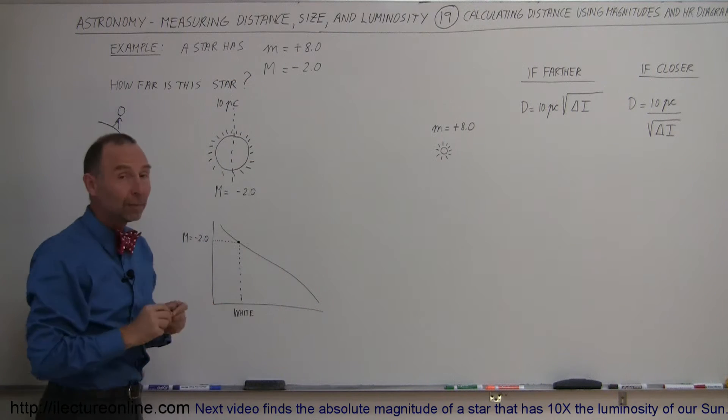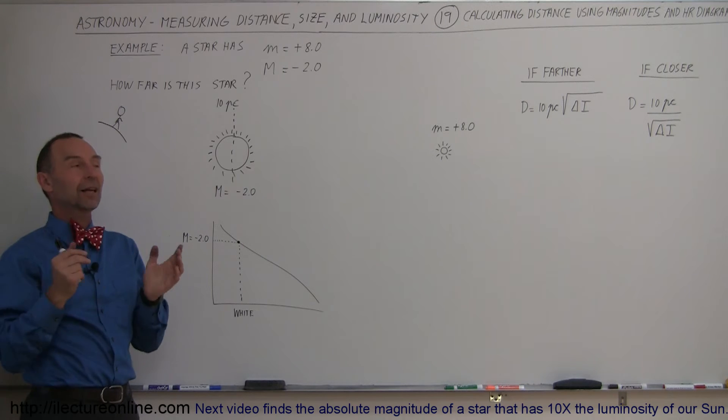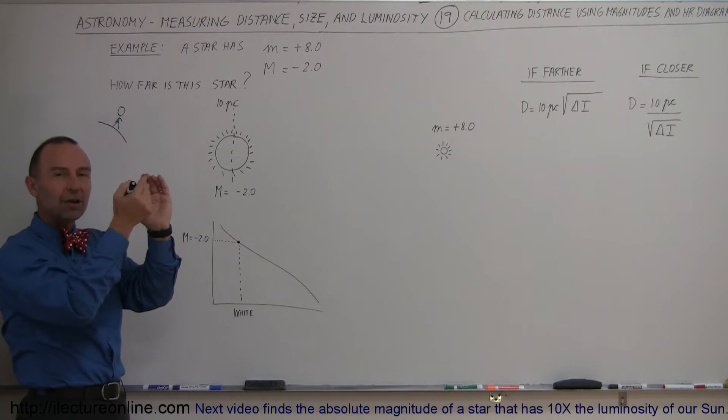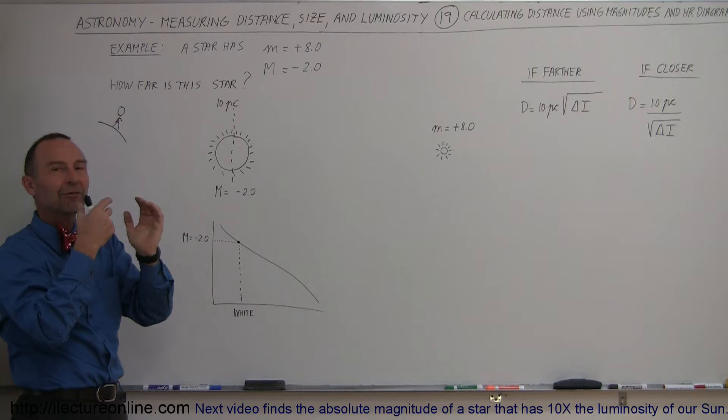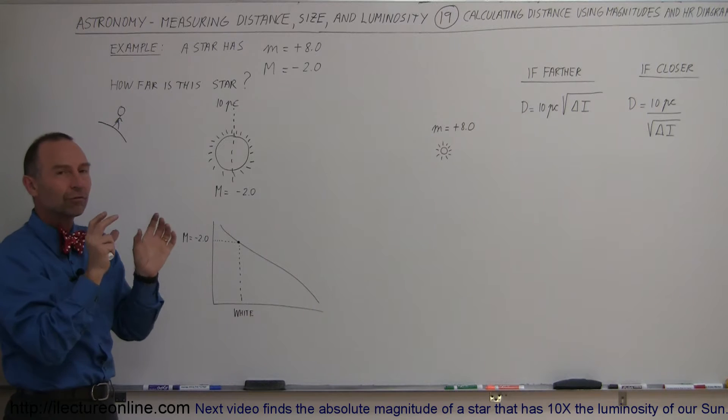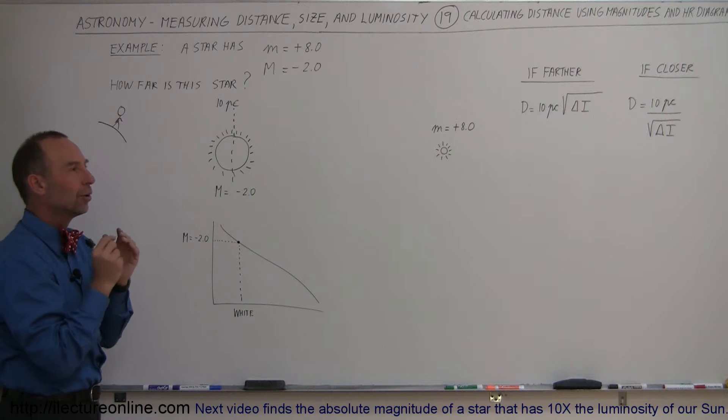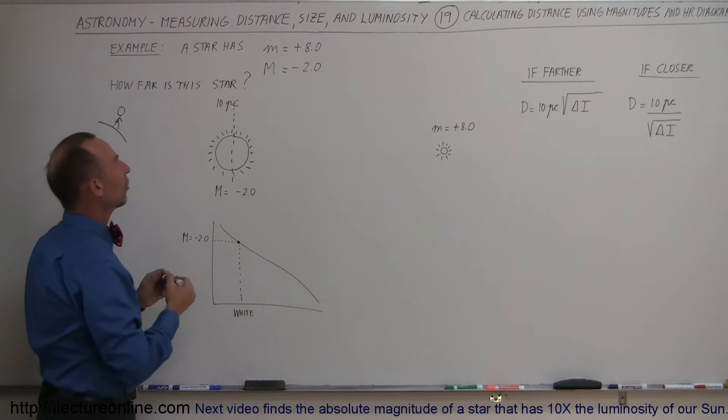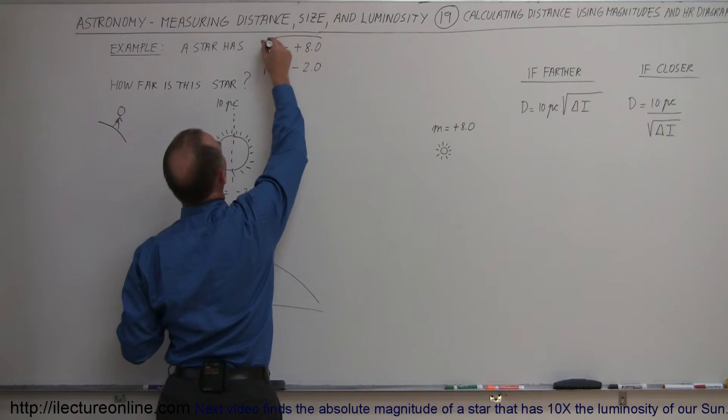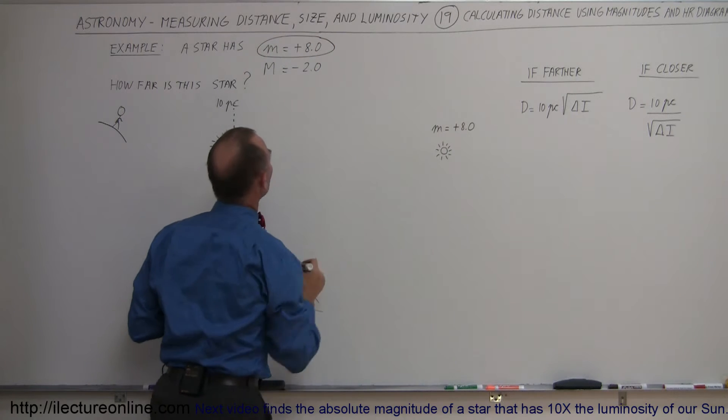Alright, well first of all, how do we figure out the apparent magnitude? We take a telescope, we look at the star, we measure the brightness of that star, we have means to do that using a certain filtering system. We can actually find the color of the star and the brightness of the star using our telescopes. And so we come up with this measurement, that's how bright the star appears to us.